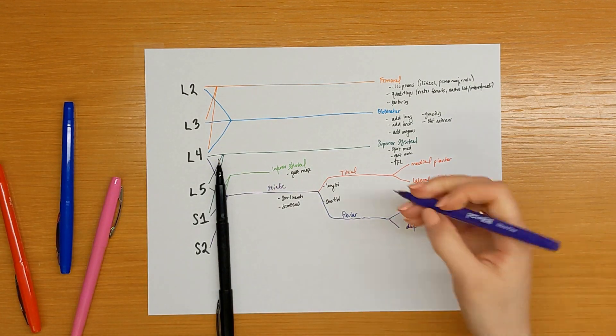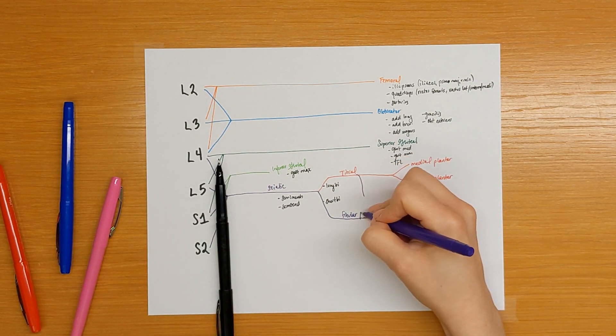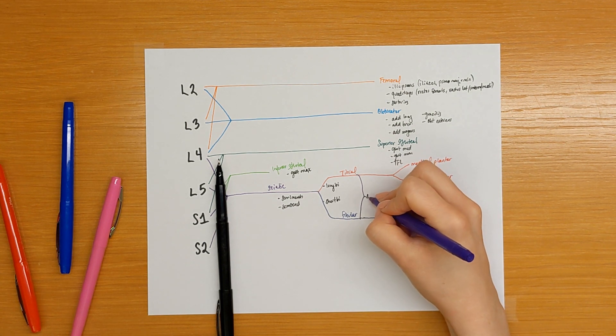I forgot to draw here that the tibial and fibular nerves combine to form the sural sensory nerve.